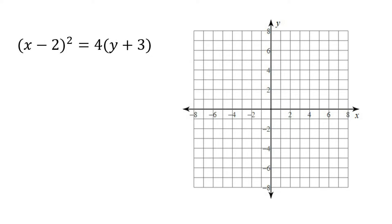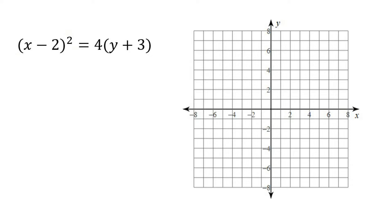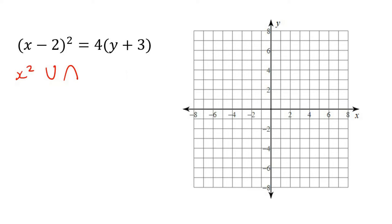Here's our first example. The first thing to look at: is it x squared or y squared? It's x that has the square, so this is definitely an up-or-down parabola. This one is positive — there's no negative in the front — so if it's positive it goes up, if it's negative it goes down. So we definitely have a graph that's going to go up.